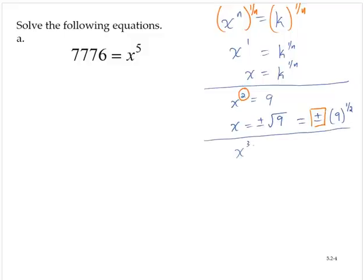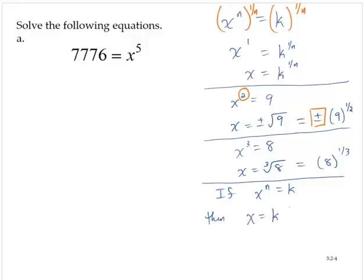But if we were solving, say, x cubed equals 8, there's only one real number whose cube is 8. And that number is 2, which is the cube root of 8. And so that's the same as 8 to the 1 third power. Notice that there's no positive or negative here. So the point of all this is, if x to the n equals k, then x equals k raised to the 1 over nth power for n odd, x is equal to positive or negative k to the 1 over nth power for n even.